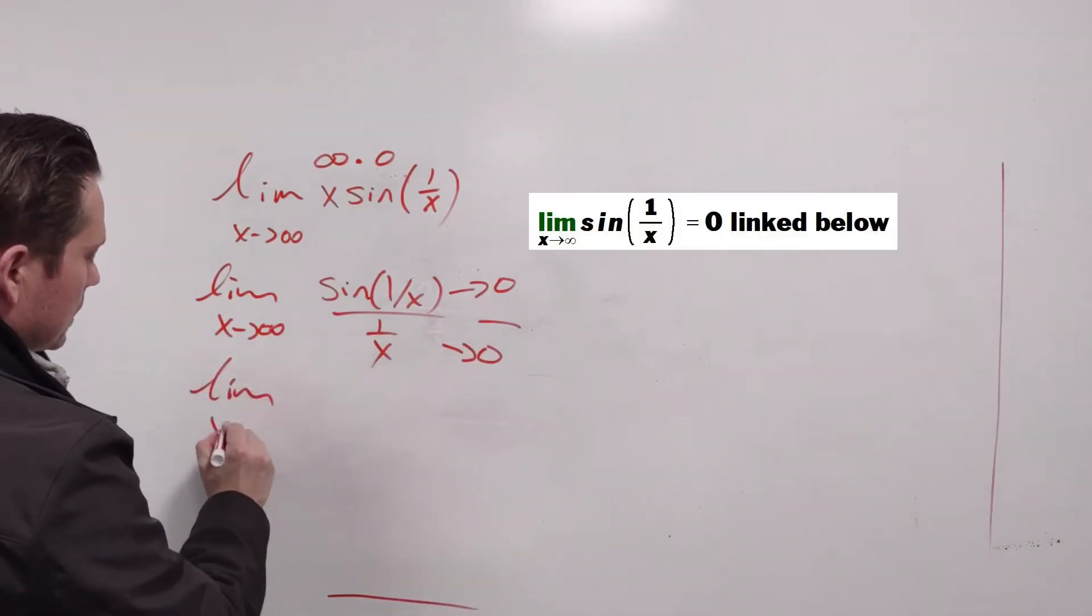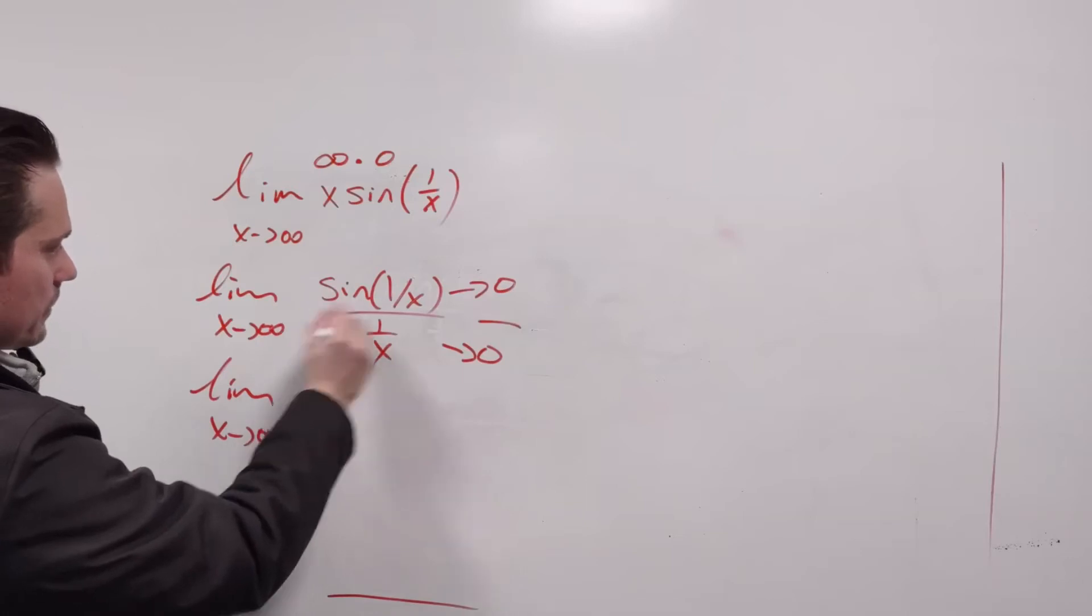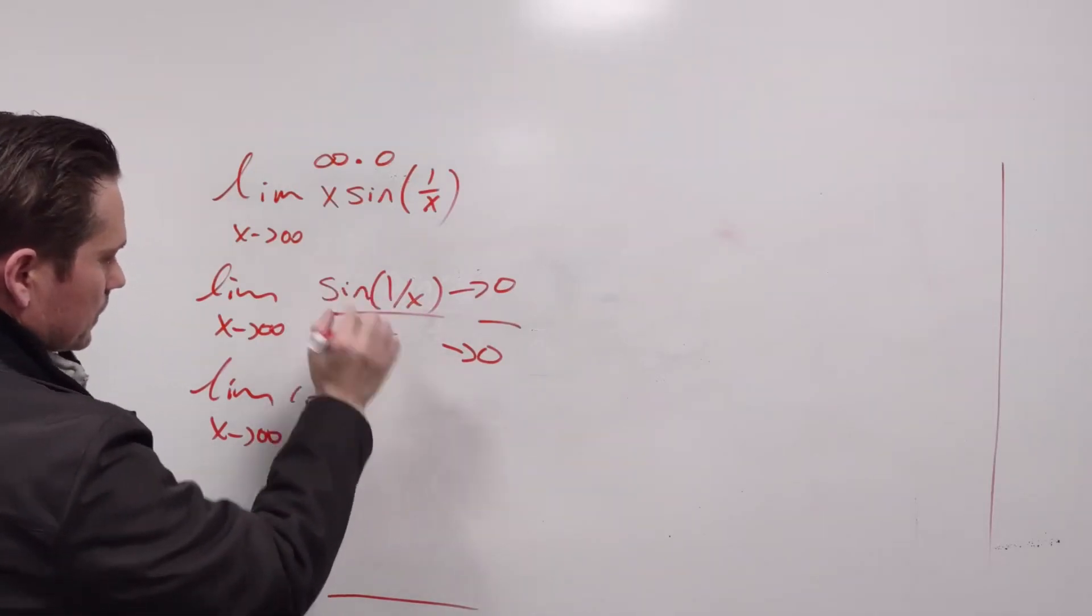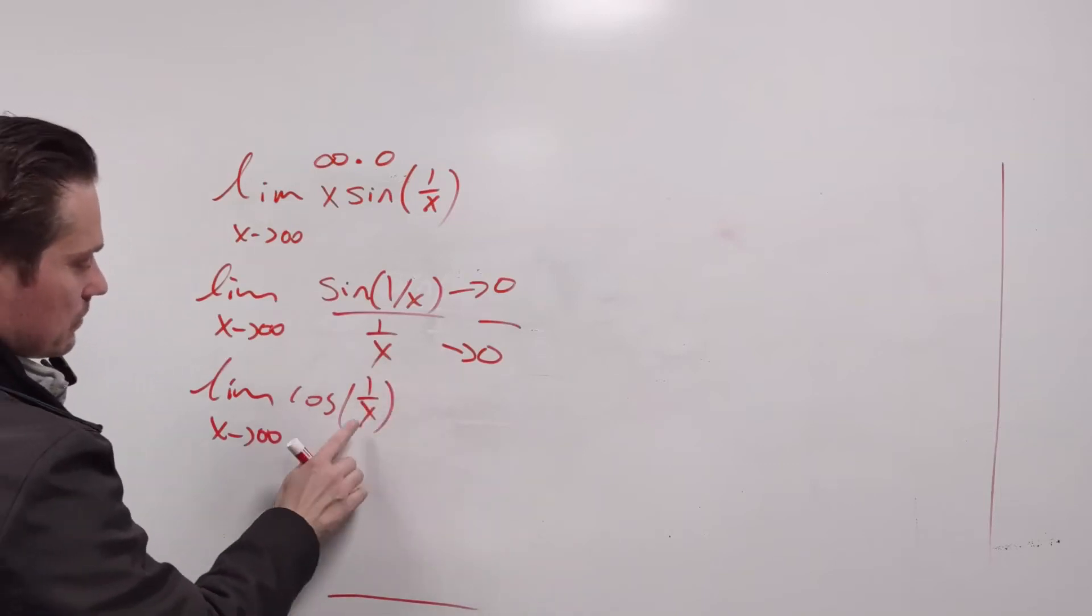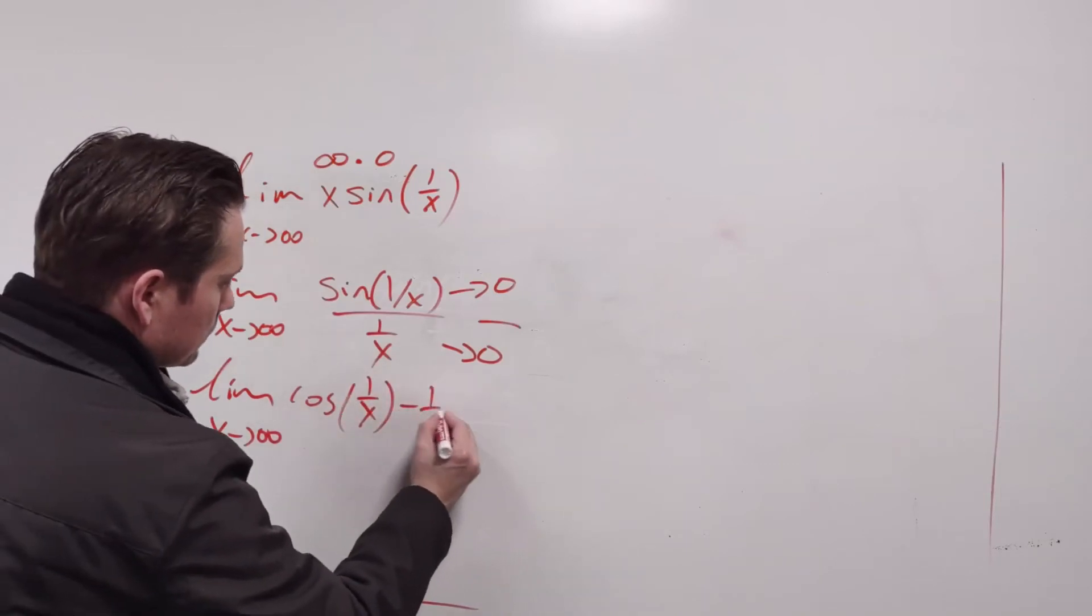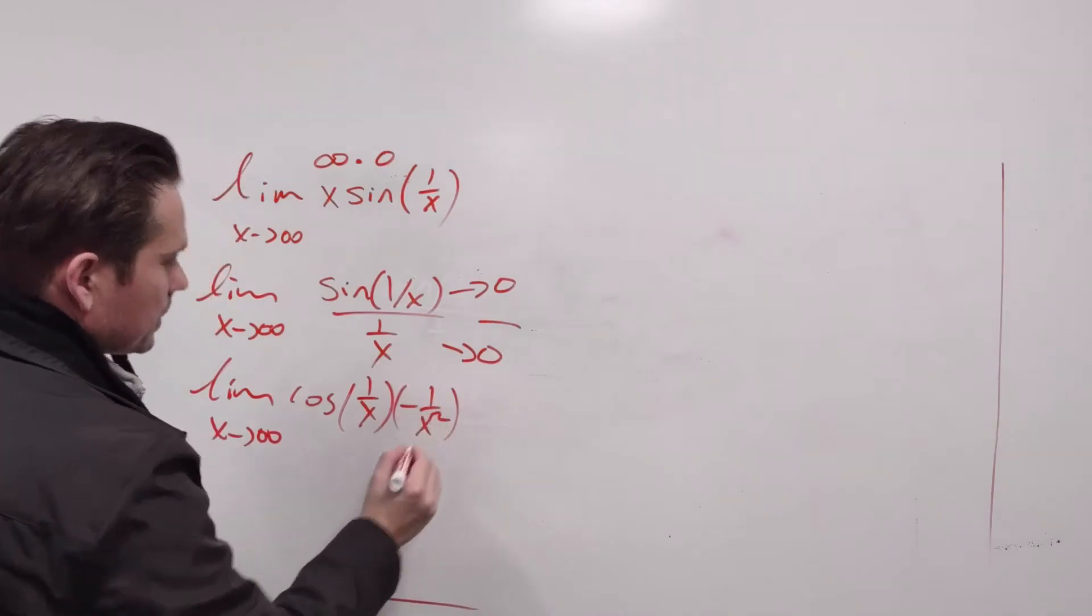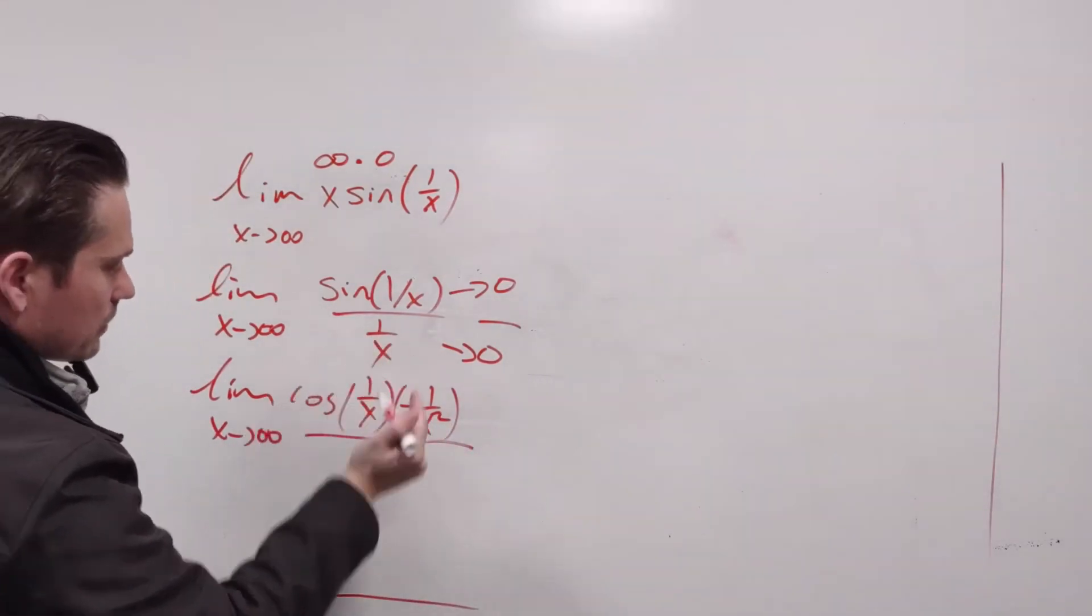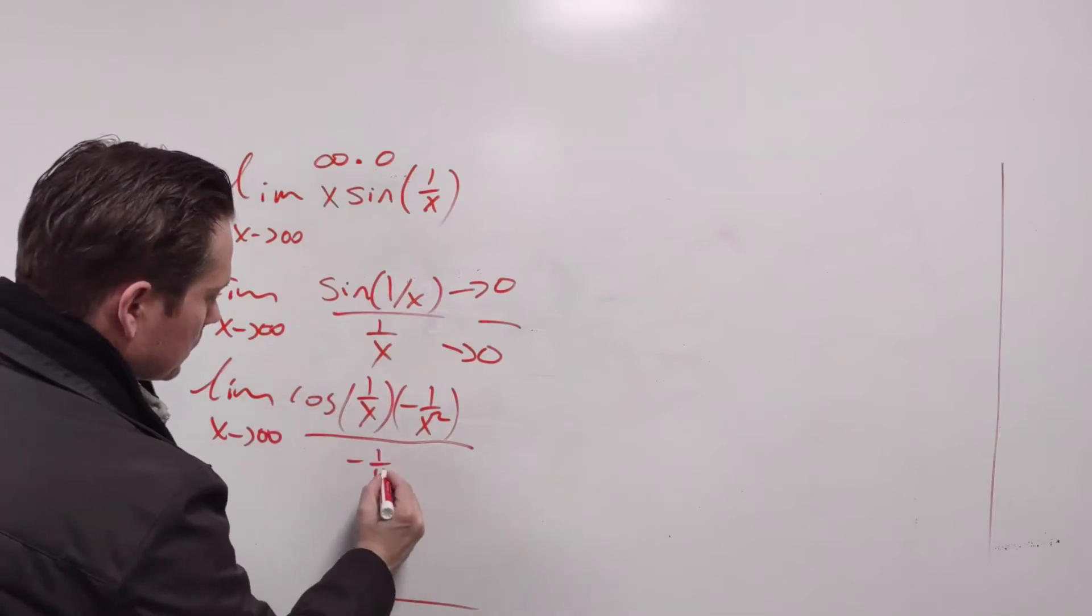So we're going to have the limit as x goes towards positive infinity. Differentiate the numerator by the chain rule, so it's cosine, the derivative of sine. Copy the inside 1 over x, and then multiply by the derivative of 1 over x, which is negative 1 over x squared. I have a video attached on how to do that part. Then you divide this by the derivative of 1 over x, which is again negative 1 over x squared.